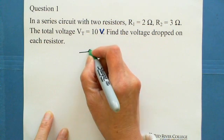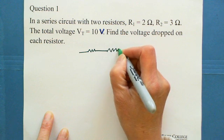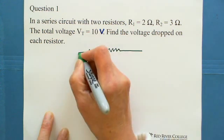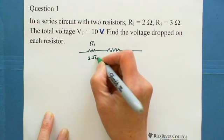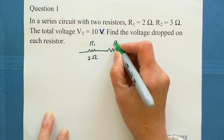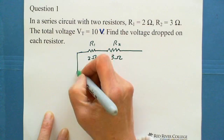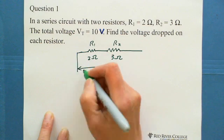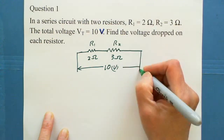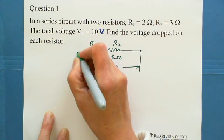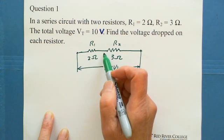So there are two resistors. One is R1, it's 2 ohms. The other is R2, 3 ohms. The total voltage is 10 volts.